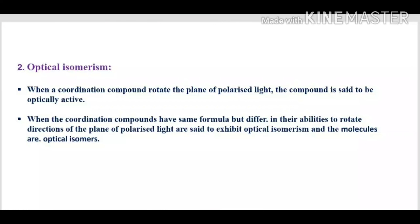The second type of stereoisomerism is optical isomerism. When a coordination compound rotates the plane of polarized light, it is said to be optically active. Ordinary light oscillates in multiple planes, but polarized light oscillates in only a single plane. When this polarized light passes through an optically active compound, the direction of oscillation is rotated either to the right or to the left. When compounds have the same formula but differ in their ability to rotate polarized light, they exhibit optical isomerism.